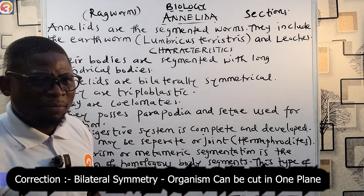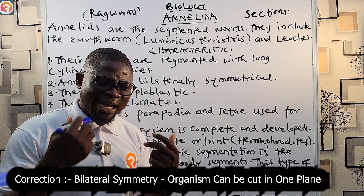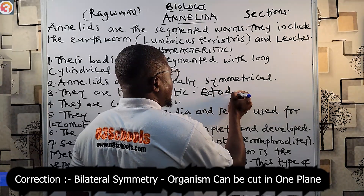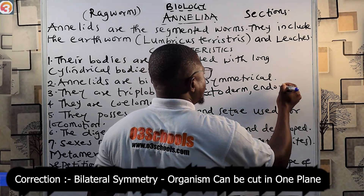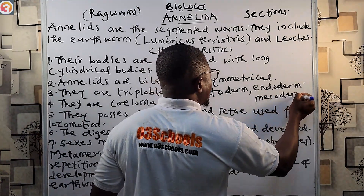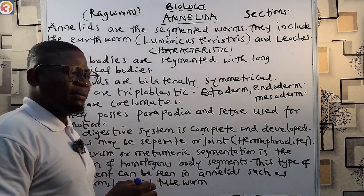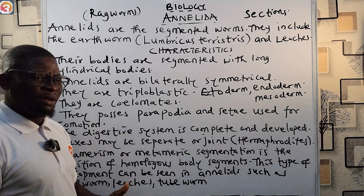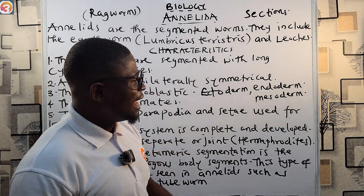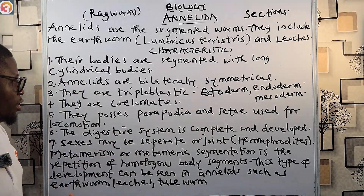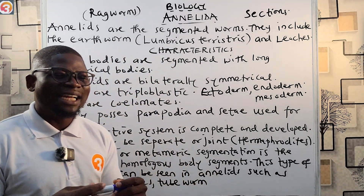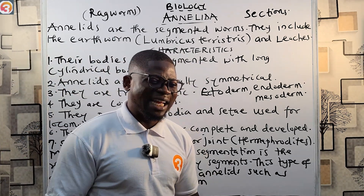They are triploblastic, meaning they have three germ cell layers: the ectoderm, the endoderm, and the mesoderm.